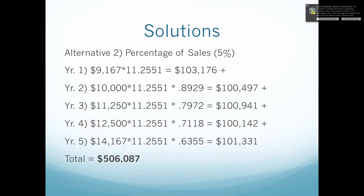When we do the math we get $103,167 for year 1, $100,497 for year 2, $100,941 for year 3, $100,142 for year 4, and $101,331 for year 5. So the present value of alternative 2's lease option is $506,087. That is larger than the $504,851 for the fixed rent, so of the two we would take the fixed rent — but we still need to evaluate alternative 3.